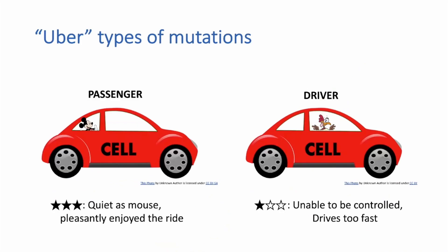Finally, I want to briefly touch on a broader category of mutations and genes that can occur in cancer, using an Uber analogy. First, you can have passenger mutations, which are mutations that occur but don't directly affect the cell — they are the passengers that ride along in the cell and are quiet as a mouse. You can also have driver mutations, which help drive the cancer forward and affect the growth or proliferation of the cancer cell. Mutations that occur in oncogenes or tumor suppressors can be categorized as either passenger or driver mutations, depending on how they affect that particular cell type.